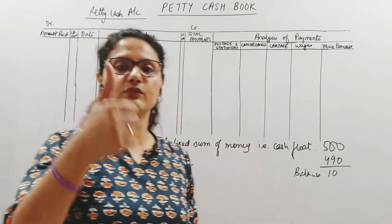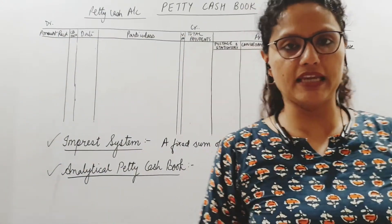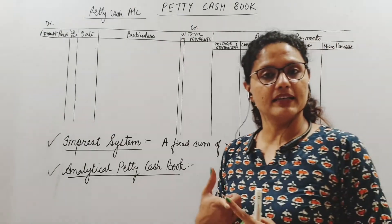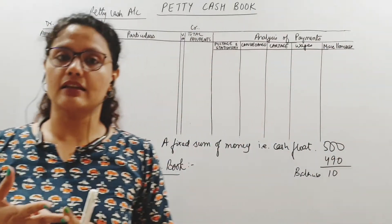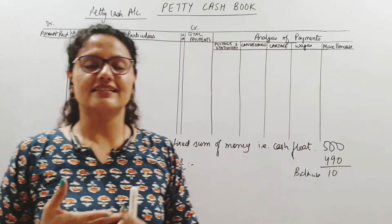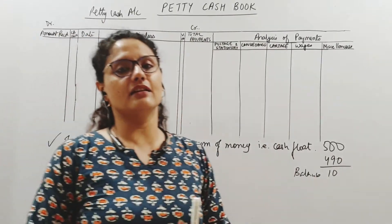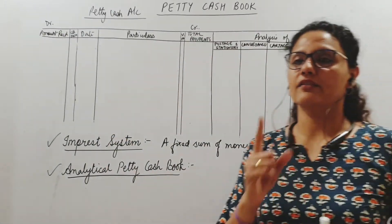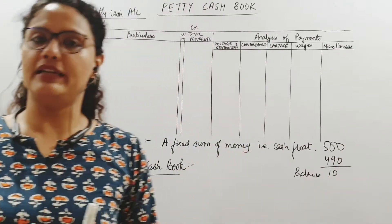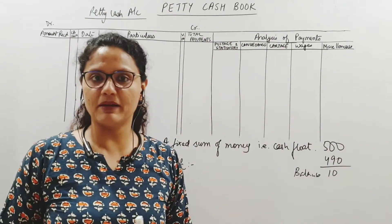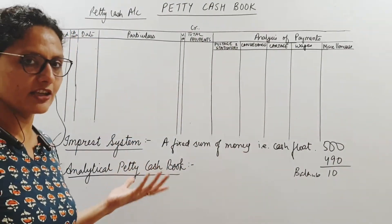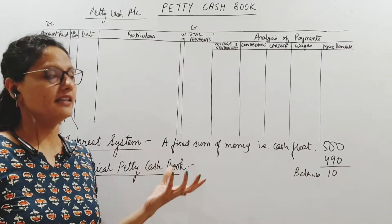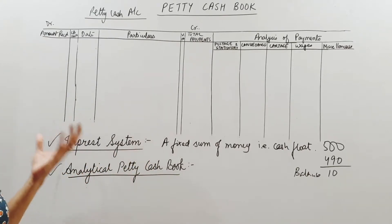Petty cash book: number one, reduces the burden of the main cashier. It records all petty cash transactions in a systematic manner. It helps to put a check on cash expenses and regulate cash flow. And it helps to put a check against theft and embezzlement of cash. So that is why we make a petty cash book.